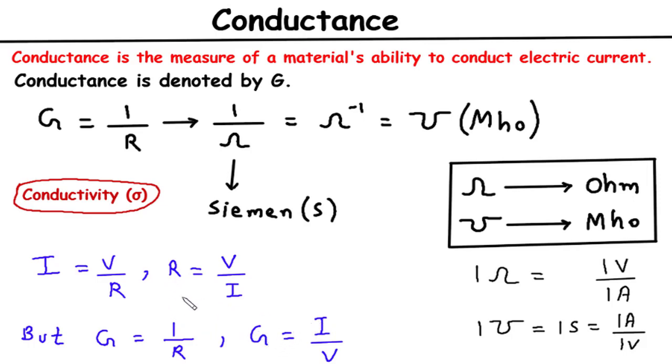Ohm's law states that the current flowing through a conductor is directly proportional to the voltage applied across it and inversely proportional to the resistance of the conductor. Mathematically, Ohm's law can be expressed as I equals V by R, where I represents the current, V is the voltage, and R denotes the resistance.